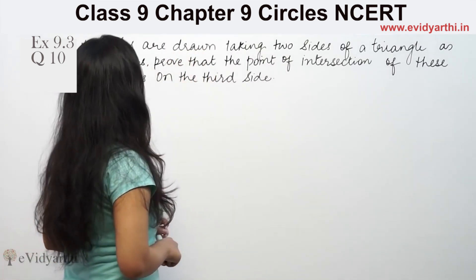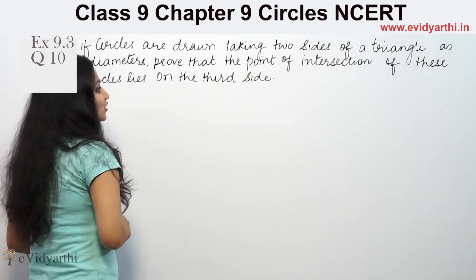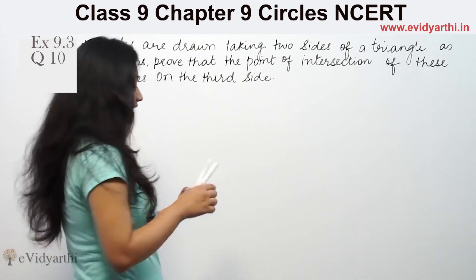It says if circles are drawn taking two sides of a triangle as diameters, prove that the point of intersection of these circles lie on the third side.